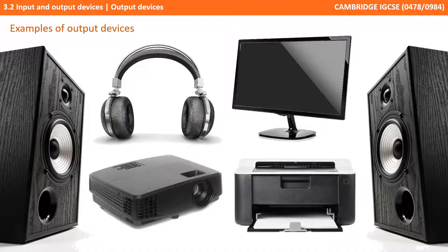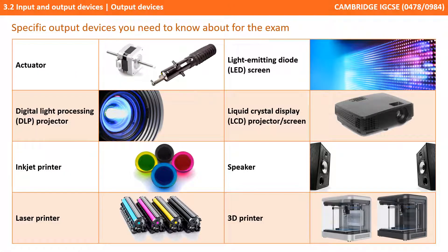On the screen now are some of the most common output devices that you'll probably be familiar with. Just like input devices, there are literally thousands of possible output devices. The exam board have limited the list that you need to know about for the exam to the following: actuators, digital light processing projectors, inkjet and laser printers, light emitting diode screens, liquid crystal display projectors, speakers and 3D printers. We're going to look at each of these now.